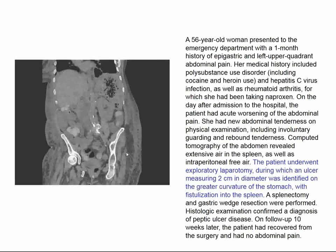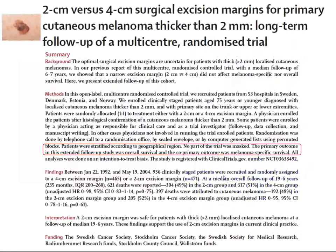The patient from last week with air in the spleen indeed had a peptic ulcer. She underwent exploratory laparotomy, had the ulcer repaired, and had her spleen removed. They didn't show the ulcer, but here's the picture of it.